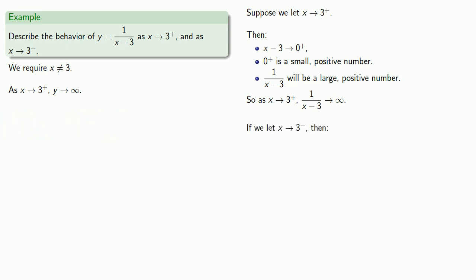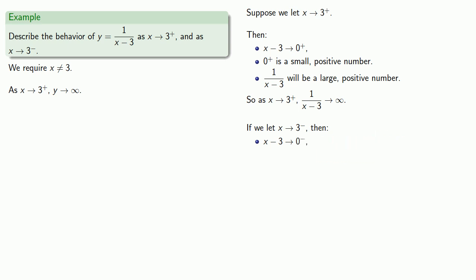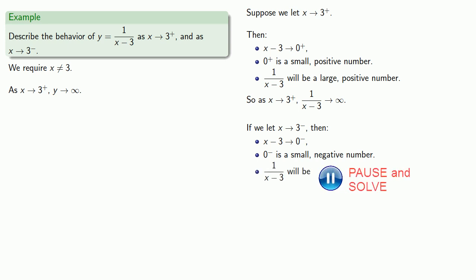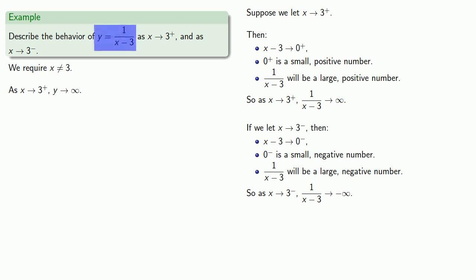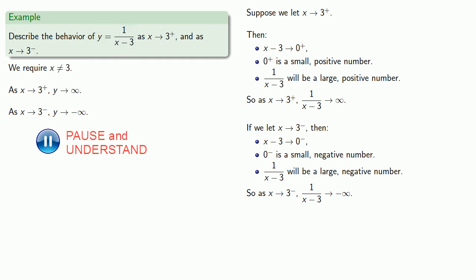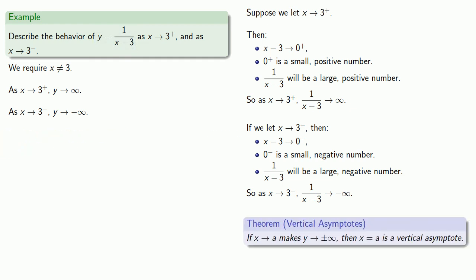On the other side, if we let x get close to 3 from below — in other words, x gets close to 3 but stays slightly less than 3 — then x minus 3 gets close to 0 but stays slightly less than 0. That's a small negative number. So 1 over x minus 3 will be a large negative number. As x gets close to 3 from below, 1 over x minus 3 goes to minus infinity, and since equals means replaceable, y goes to minus infinity. A vertical asymptote occurs for any value of x that makes y go to plus or minus infinity, so x equals 3 is a vertical asymptote.